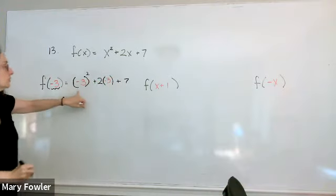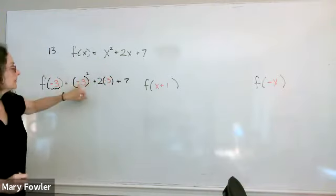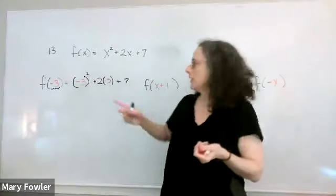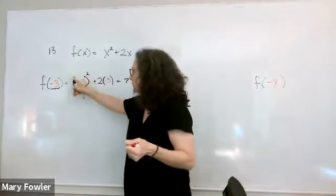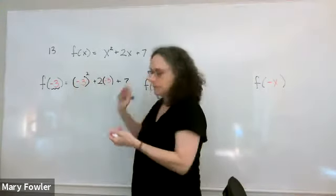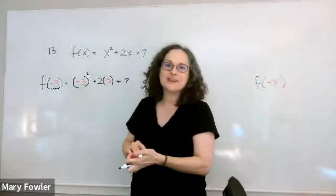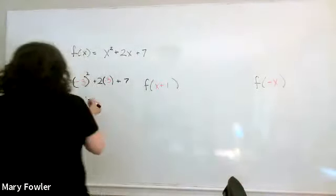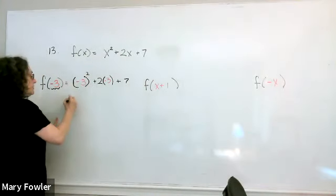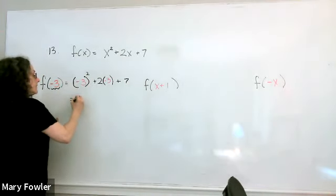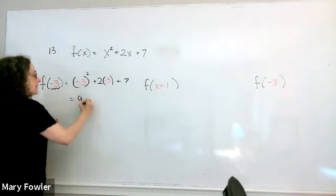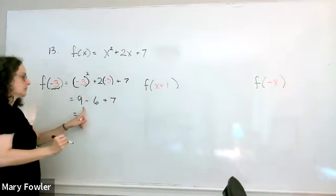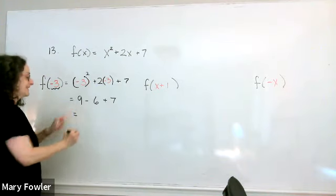And now we're going to simplify the expression, which means follow the order of operations to evaluate the numerical expression. Minus 3 squared is 9, minus 6 plus 7, so we get 10.